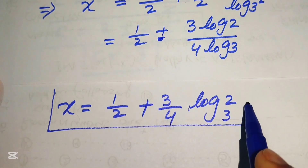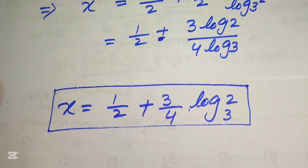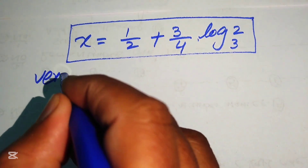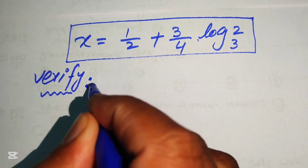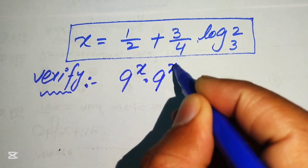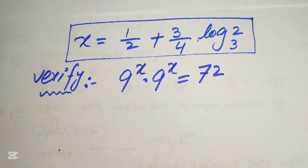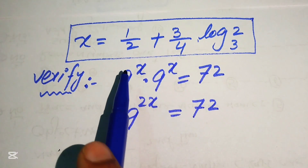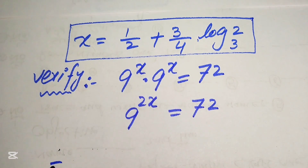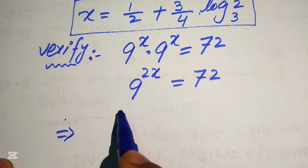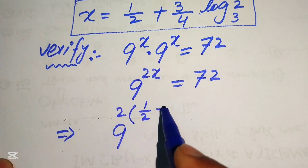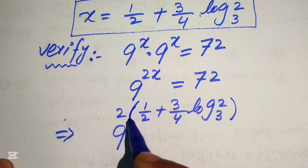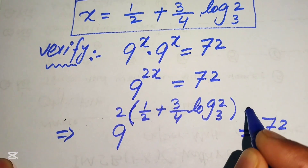This is the final value of x. Now we verify whether this value satisfies the original equation. The given statement is 9^x · 9^x = 72, which simplifies to 9^(2x) = 72. Substituting x = 1/2 + (3/4)·log₃2, we get 9 to the power of 2·(1/2 + (3/4)·log₃2) equals 72.